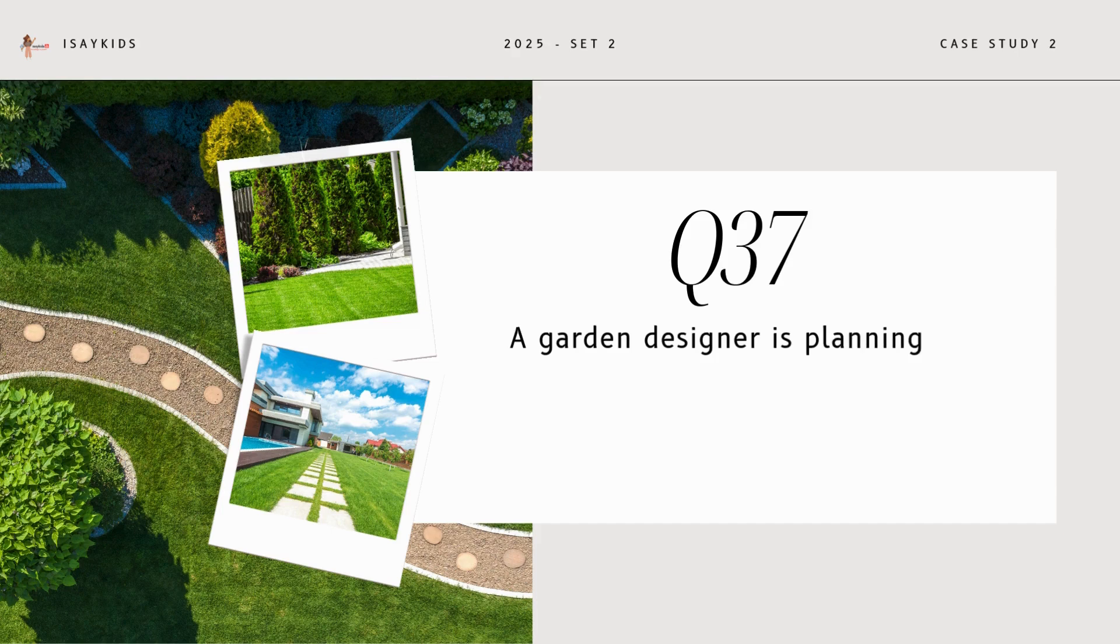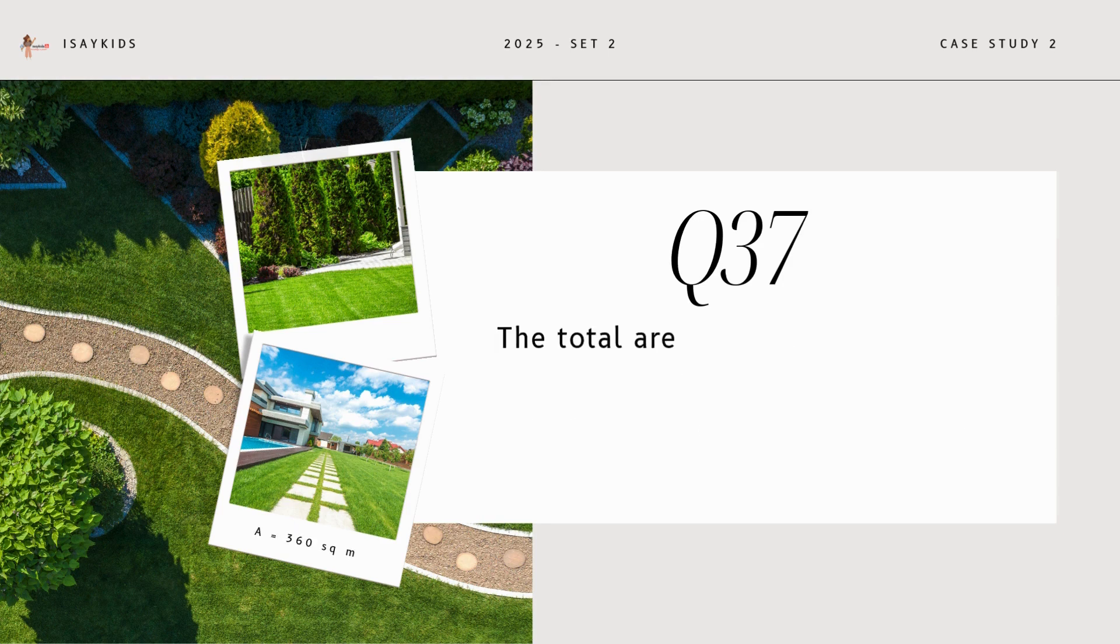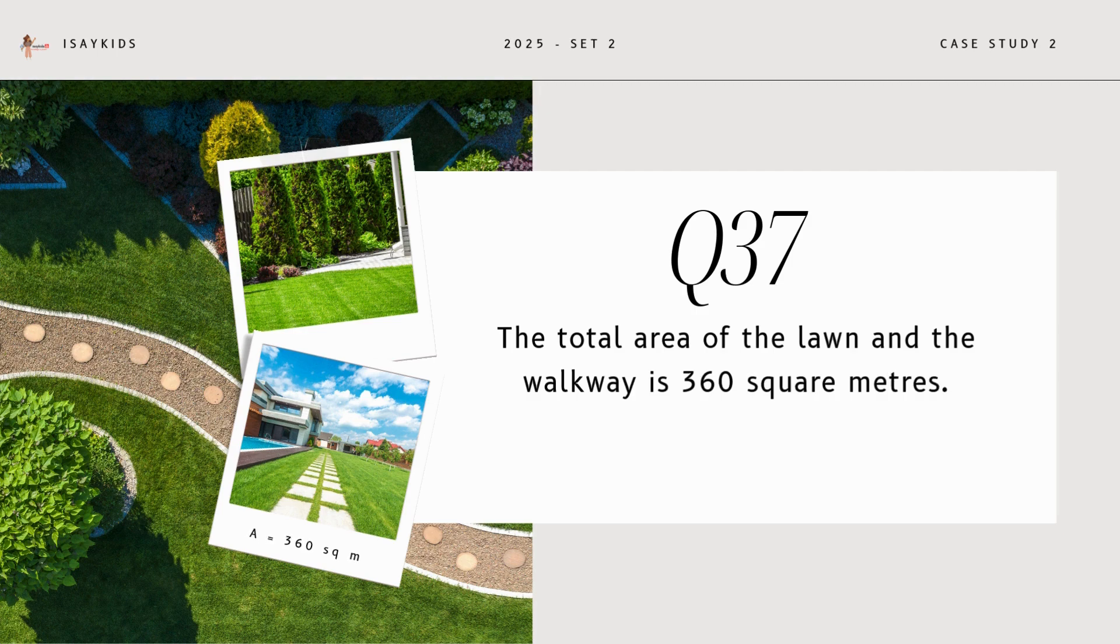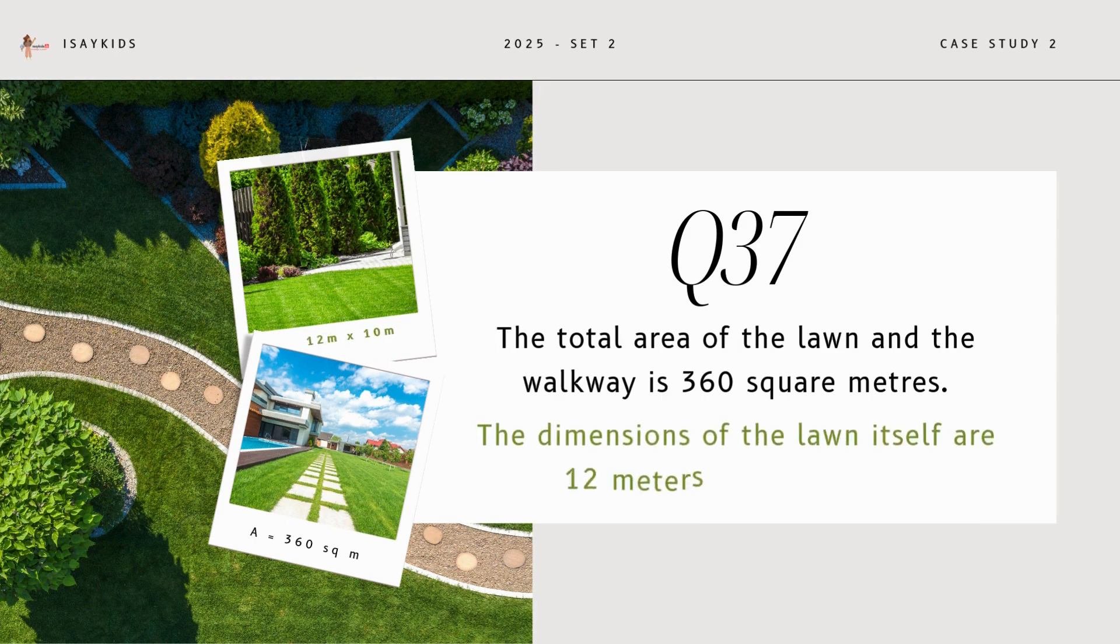A garden designer is planning a rectangular lawn that is to be surrounded by a uniform walkway. The total area of the lawn and the walkway is 360 square meters. The width of the walkway is same on all sides. The dimensions of the lawn itself are 12 meters by 10 meters. Based on this information, answer the following questions.